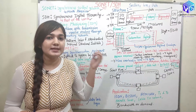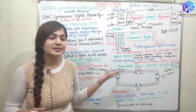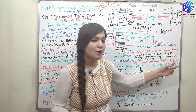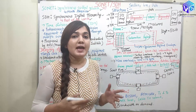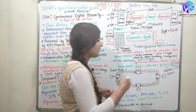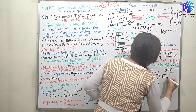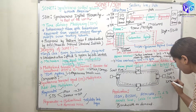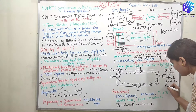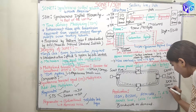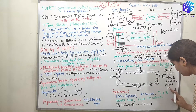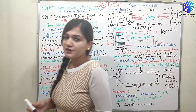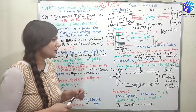We can have SDH1, SDH3, SDH6, and so on. SDH1 has a speed of ~50.112 Mbps. For SDH N, the data rate is N × 50.112 Mbps. This is how we can increase the speed.